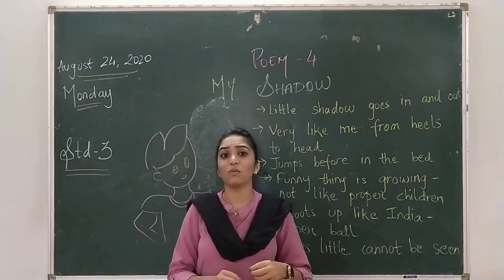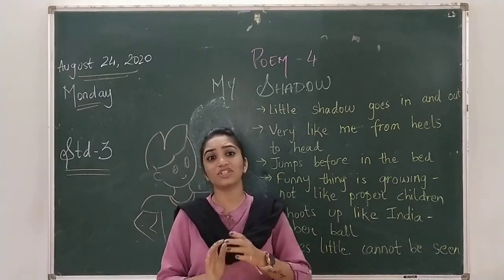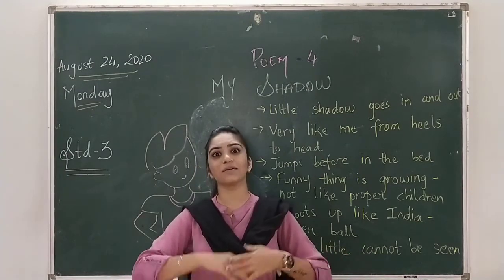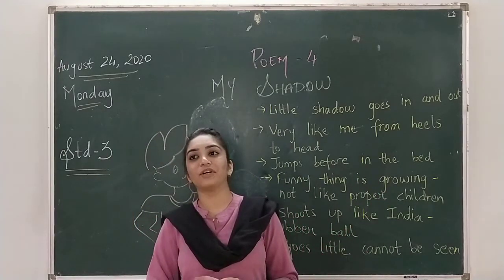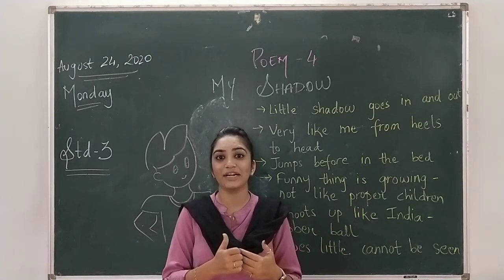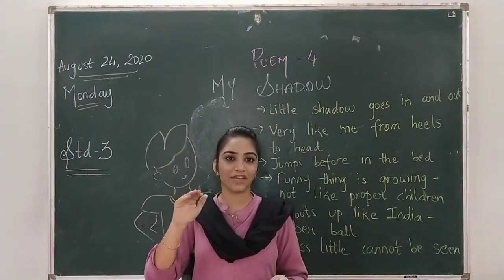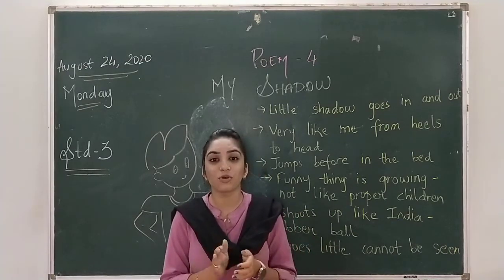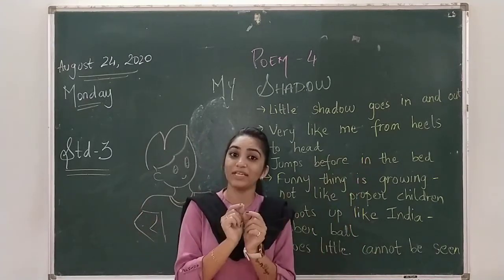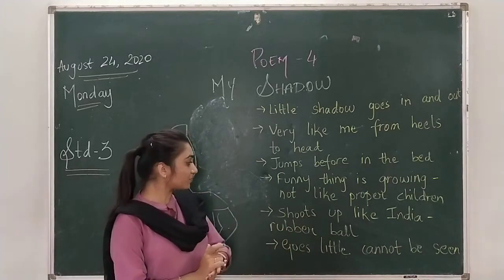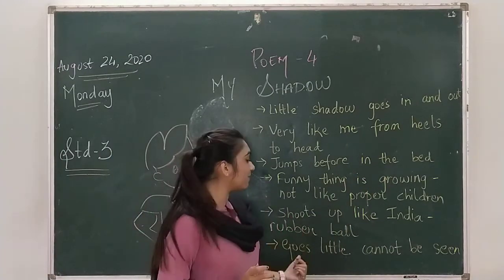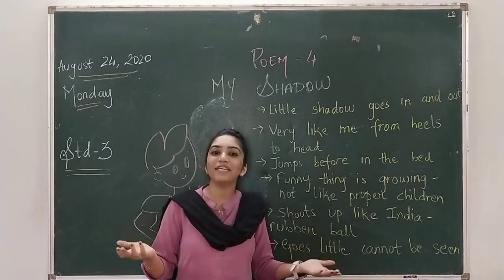The next thing that the boy says, what he finds very much funny about the shadow, is the way the shadow grows. Sometimes the shadow is very, very small that it cannot be seen, and sometimes it is as big as a child. Now if you see the shadow, it is not growing like a proper child — how we as a child, first when we were a kid, we were small, then slowly and steadily we are growing. But our shadow does not follow the growing steps of a proper child. It grows like whatever it wants — sometimes very big, sometimes very small. The example which the child is giving: it shoots up like an India rubber ball, it grows very big. And sometimes it goes so little that it even cannot be seen.